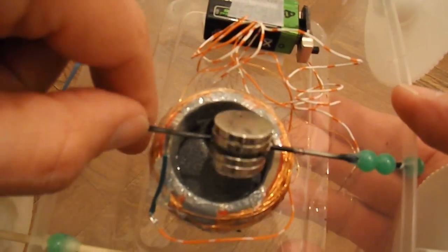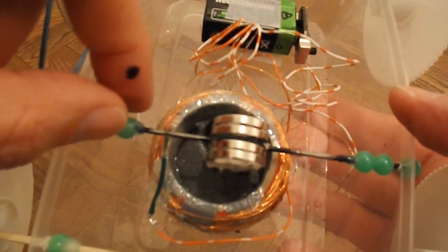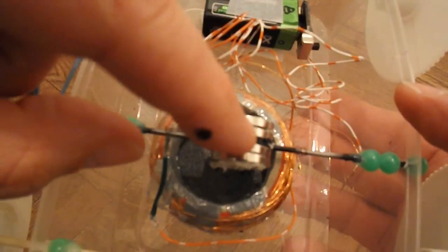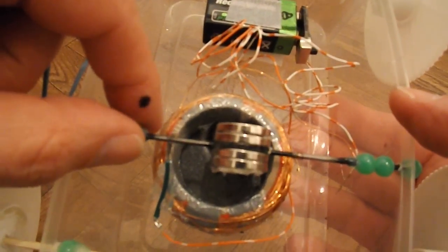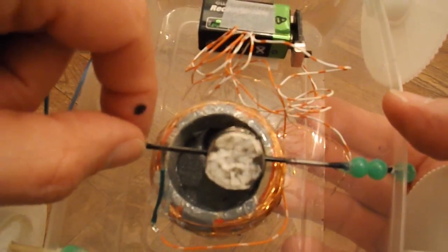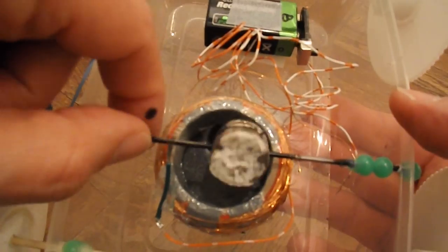So that acts as the commutator passing current when the magnets are in the right position to be repelled by the coil. So that's how that works.